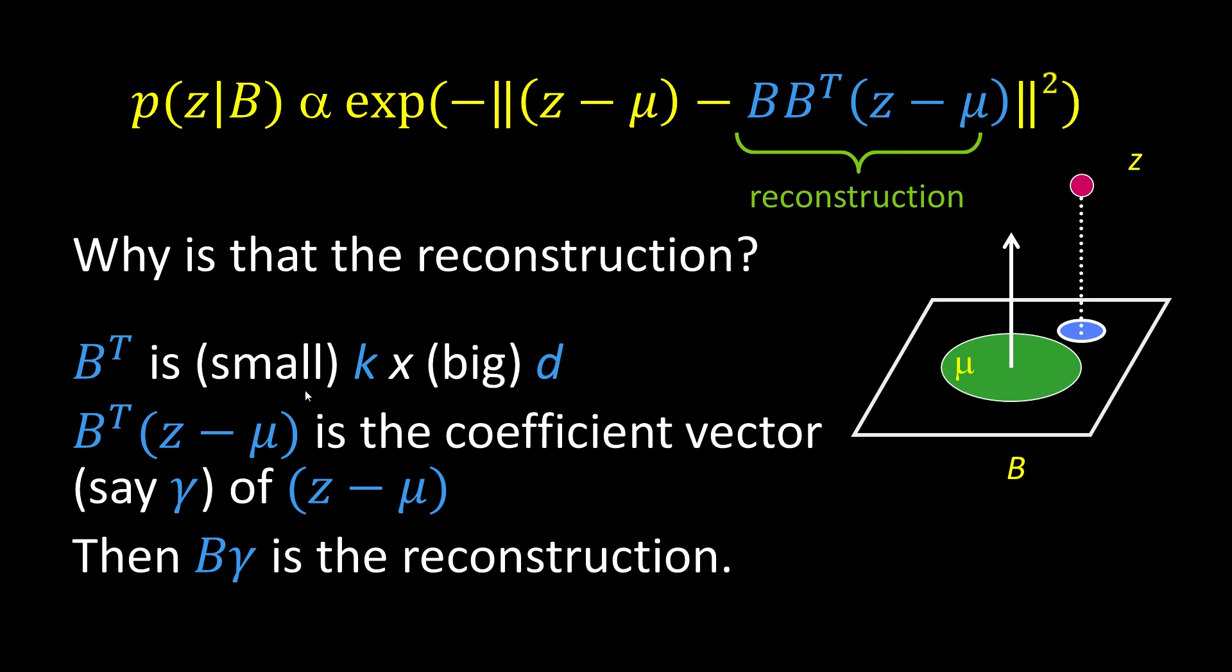So what is z minus mu? z minus mu is just the vector of the new observation minus the mean. So B transpose times z minus mu, that's just the dot product of all the eigenvectors with z minus mu.